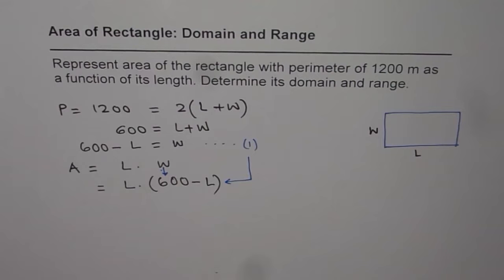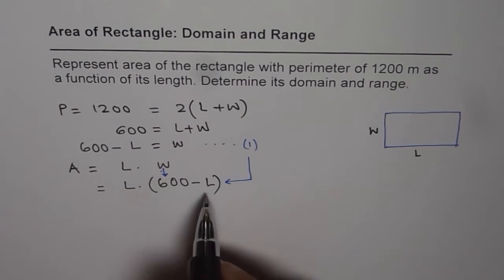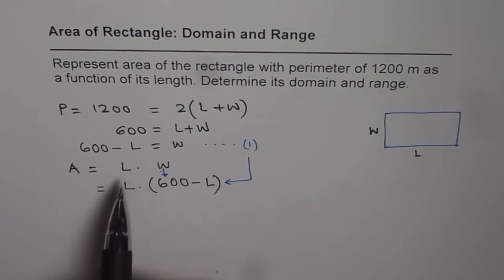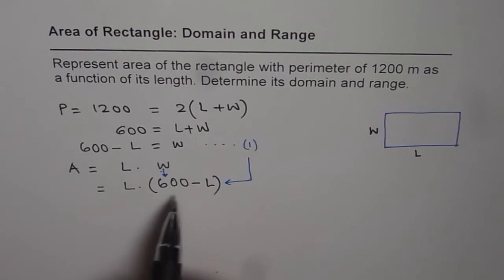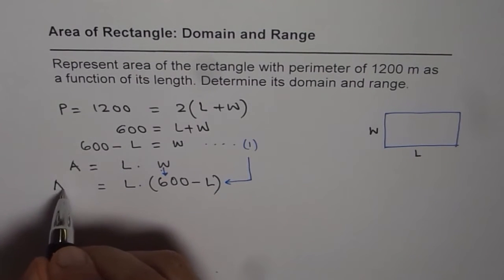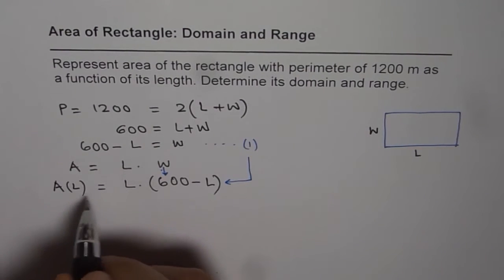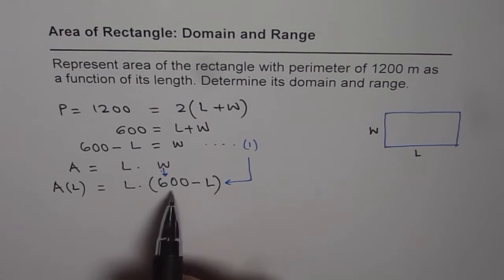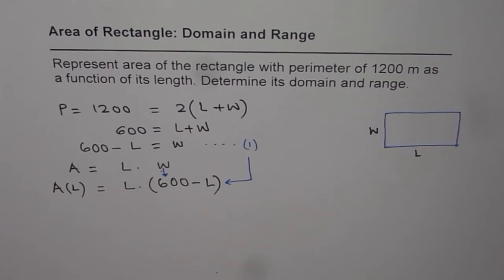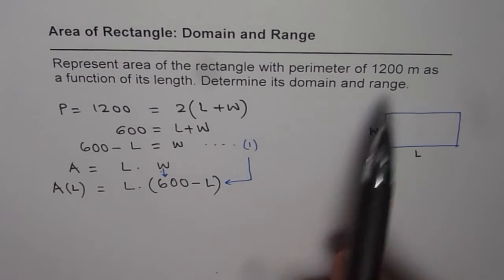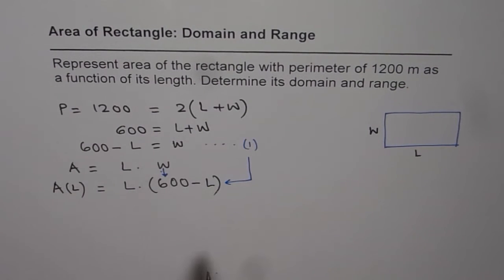Now, in this equation, you will observe that there is only one variable. Earlier there were two variables, length and width. Now there is only one variable, length. And therefore we can say that area as a function of length is given as length times 600 minus L. So that is how we can represent area of a rectangle with given parameter as a function of length. So this is a very important part and you'll have this in many word problems.